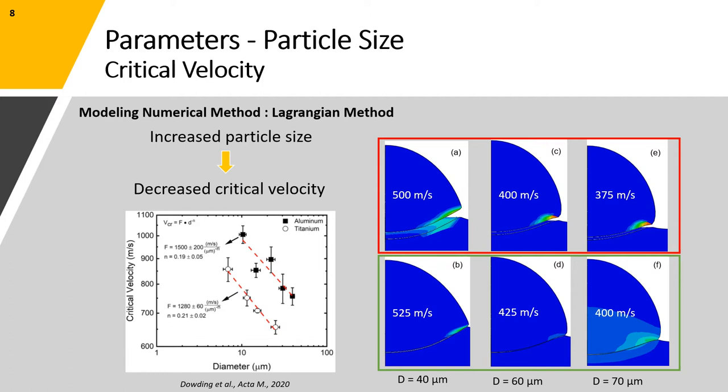Using the single particle impact model that we developed with the Lagrangian method, we considered three cases with particles with diameters equal to 40, 60 and 70 micrometers. And in each case, we measured the minimum required velocity for a successful adhesion or in other words, the critical velocity. In agreement with previous experiments and observations, it was seen that increase of the particle size will result in a decrease in the critical velocity.